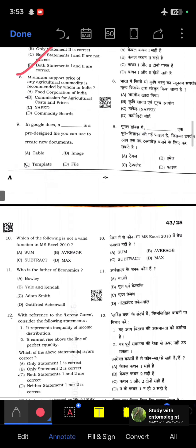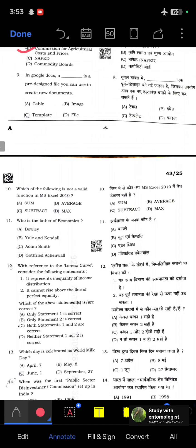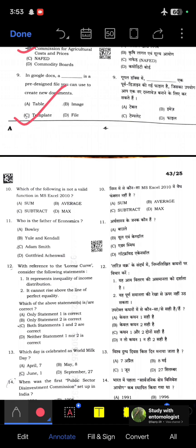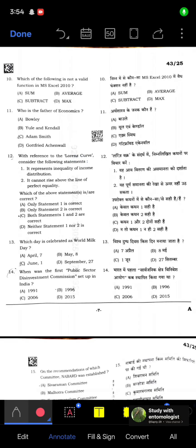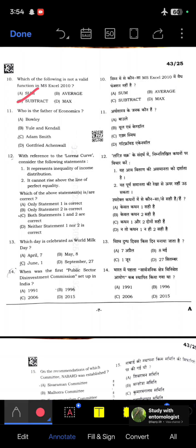Minimum support price of any agricultural commodity is recommended by CACP, that is Commission for Agricultural Costs and Prices. In Google Docs, a template is a pre-designed file you can use to create new documents. Which of the following is not a valid function in MS Excel 2010? That is subtract.